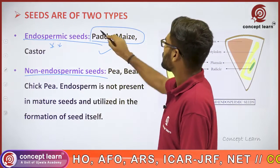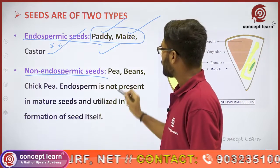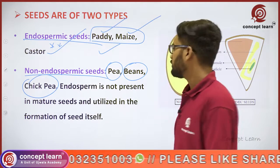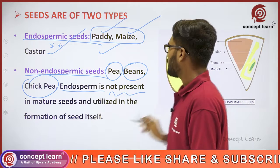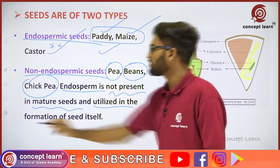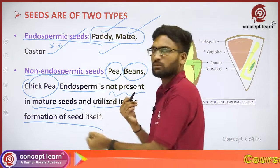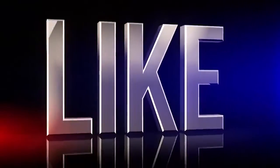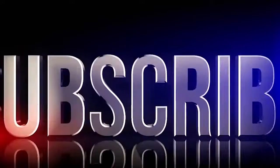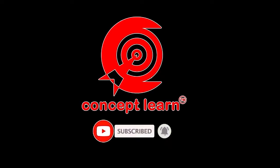In non-endospermic seeds, the endosperm is absent at the time of maturity. That means the endosperm was utilized during the formation of the seed itself, so it is not present in the mature seed. You can see this in the diagram.